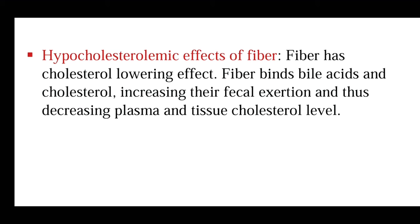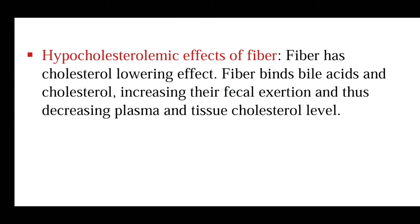That is, it interferes with the enterohepatic circulation. That is why a high fiber diet is recommended in cases of cardiovascular diseases, colon cancer, and diabetes mellitus. Looking at the activity of dietary fiber along the GI tract: in the mouth it stimulates saliva secretion; in the stomach it delays gastric emptying; in the small intestine it delays absorption, thereby acting as a hypoglycemic factor; and in the large intestine it traps water, softens stools, and thereby prevents straining.